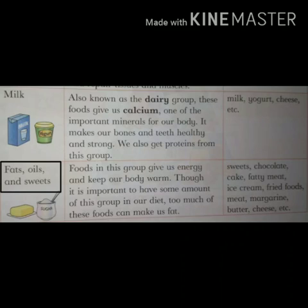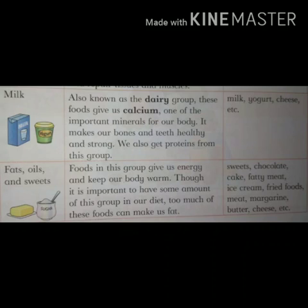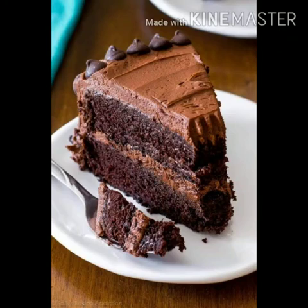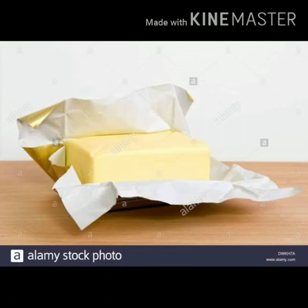Fifth is Fats, Oils, and Sweets. Fats ek natural oily substance hota hai jo bodies mein paaya jata hai. Foods in this group give us energy and keep our body warm. Though it is important to have some amount of this group in our diet, too much of these foods can make us fat. Is group ke food humme energy dete hai aur humari body ko warm rakhte hai. Is food group ki kuch amount humari body mein hona important hai, lekin is food ki zyada miqdar fat ker sakti hai — means motape ki taraf le ja sakti hai. Examples: sweets, chocolates, cake, fatty meat, ice cream, fried foods, margarine, butter, cheese, etc.